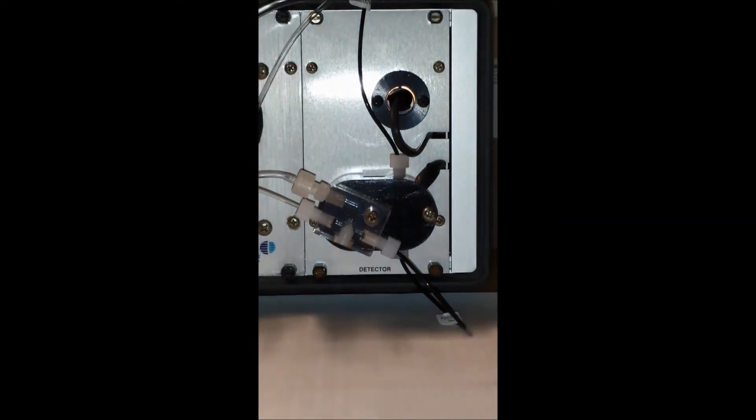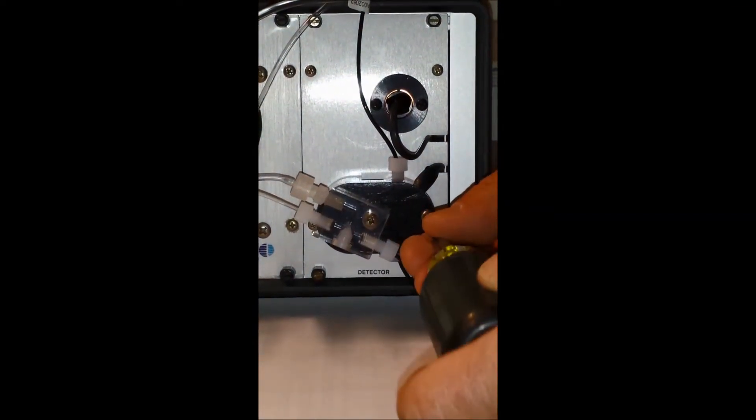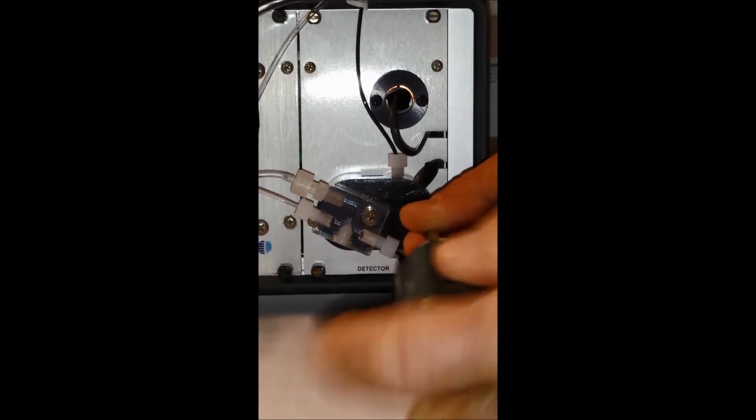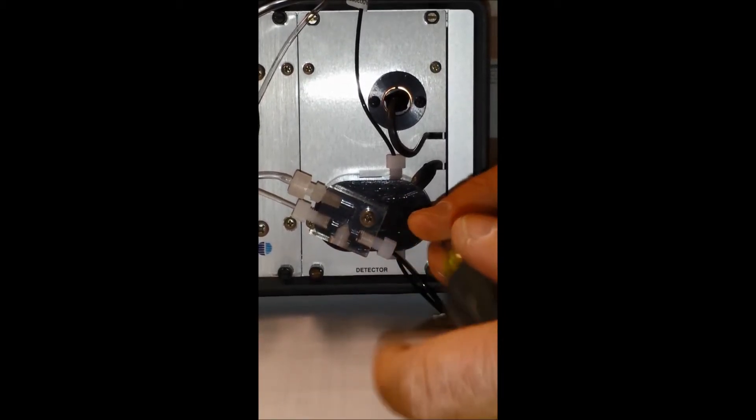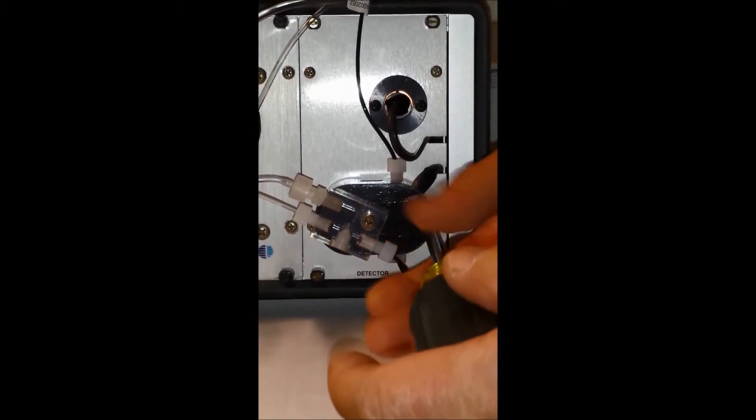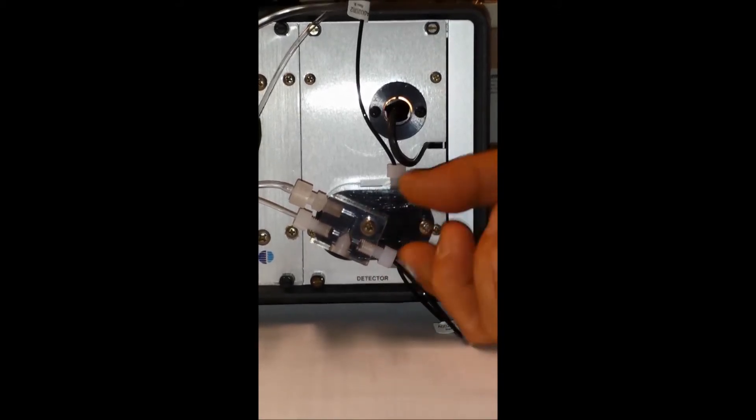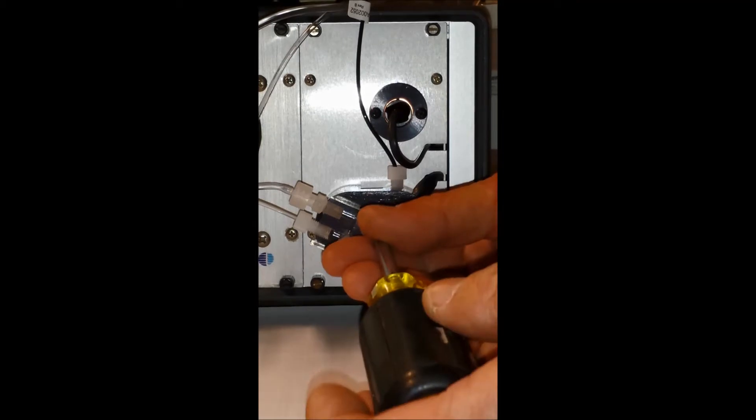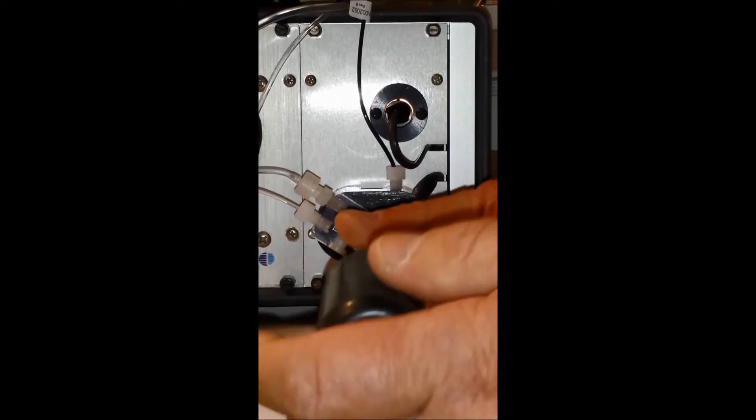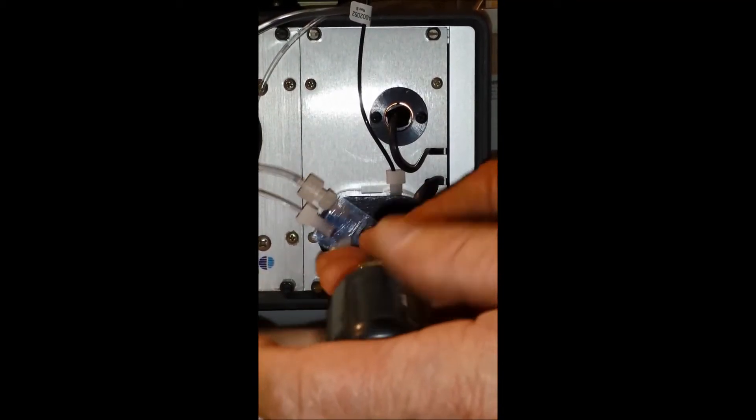Today we're having a problem with a serial comm value and we believe there's a problem in the flow cell. So we're removing the flow cell and we're going to look through the window to see if there are any issues blocking the light in there.